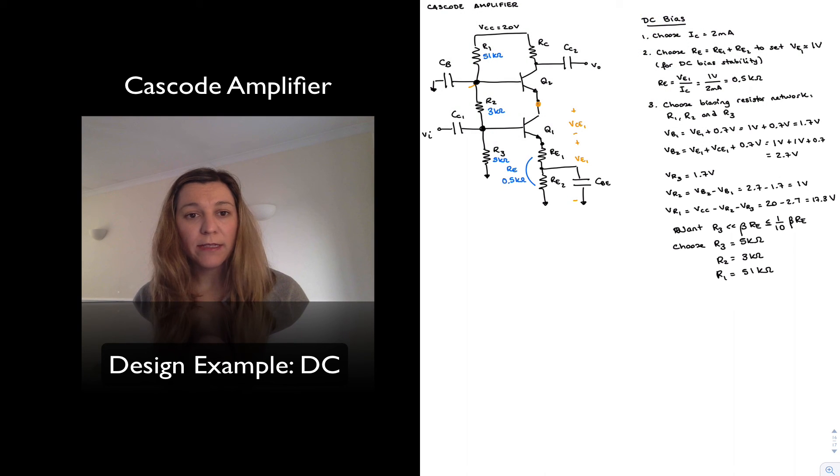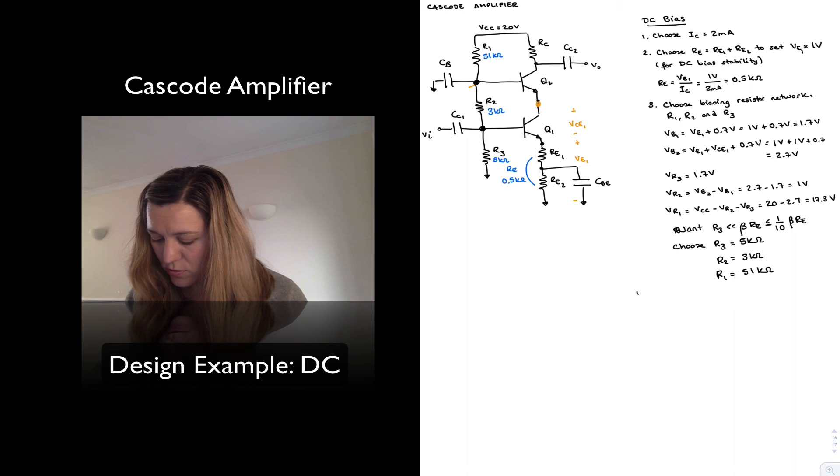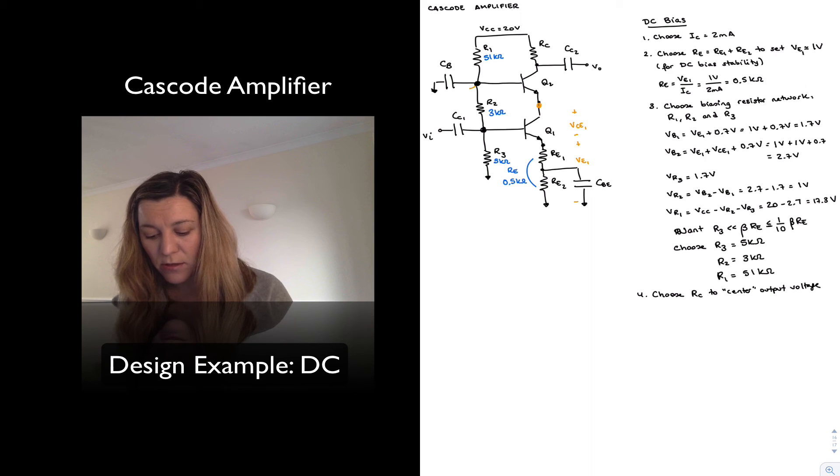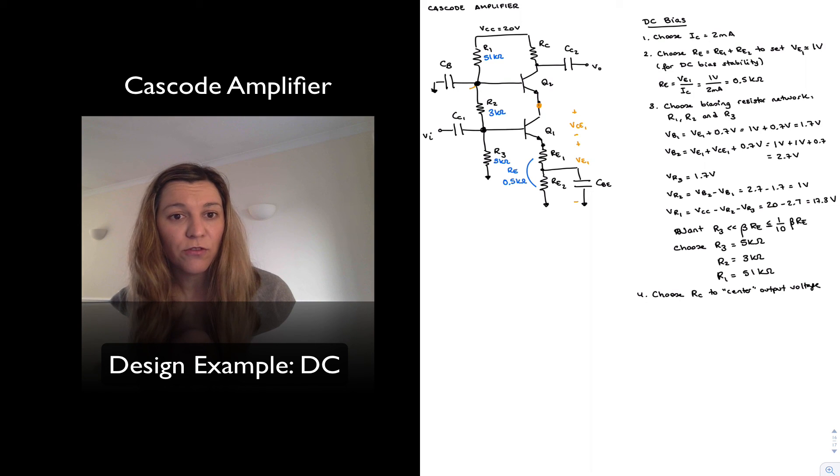And the final thing I want to do for my DC bias point is determine the value of RC. So step number four, I'm going to choose a resistor RC to center output voltage. I'm going to try to set the output voltage equal to 10 volts, which is halfway between VCC and ground. Now you may say, well, if you have approximately two volts, one volt at VE1 and another volt from VCE1, so you have two volts drop just to keep your biasing point and your transistor Q1 happy, then you don't really have 20 volts of swing, but you really only have 18. So you should set your output point, your VC for the collector of Q2, at halfway between those two points, 2 volts and 20 volts, somewhere around 18 volts. And you can do that. That will give you maximum output voltage swing.